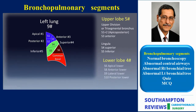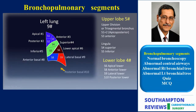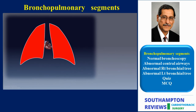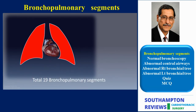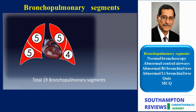The left lower lobe retains the same general arrangement as the right side — apical and common basal. The left apical (LS6) is sometimes known as the superior. The common basal, having lost LS7, now has the anterior basal (LS8), lateral basal (LS9), and posterior basal (LS10). The oblique fissure on the left separates five segments above it from four below it.